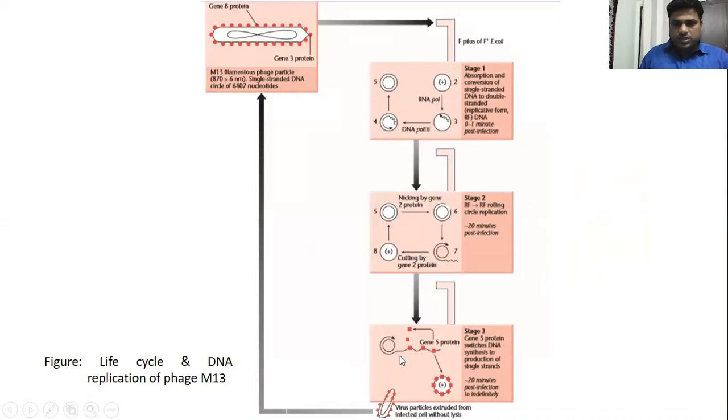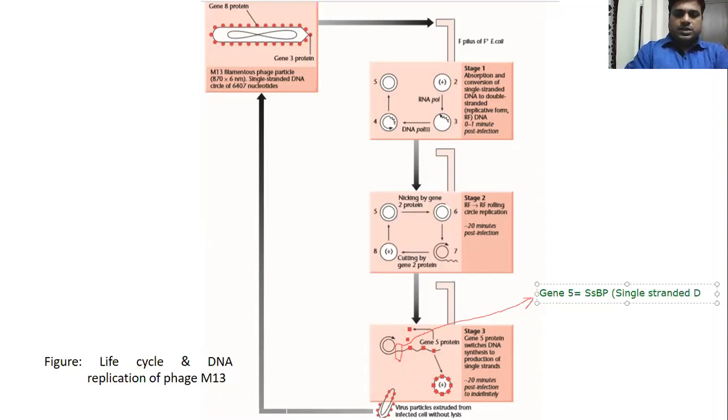In the next steps, this single-stranded region is more prone to nuclease action, so it has to be protected. That protection will be through certain SSB proteins. Gene 5 codes for single-stranded DNA binding protein (ssDNA-BP or SSB).